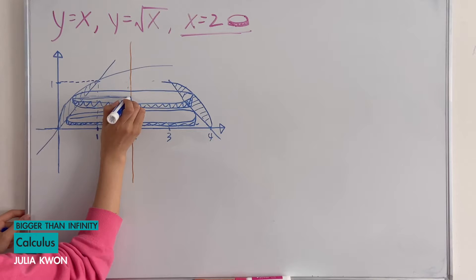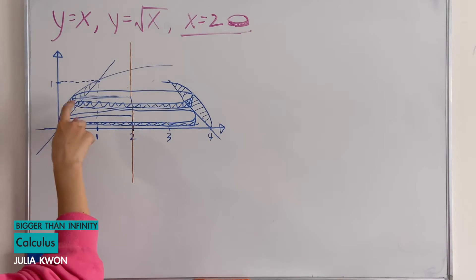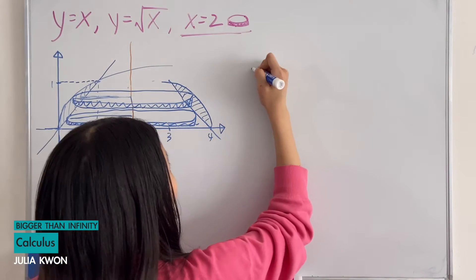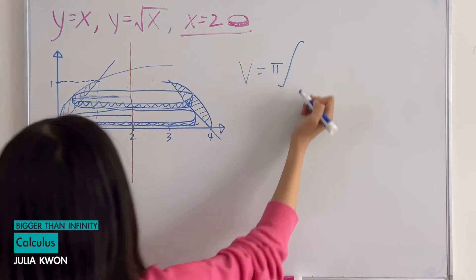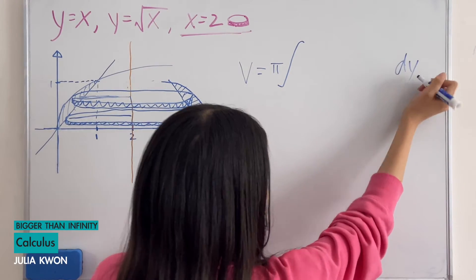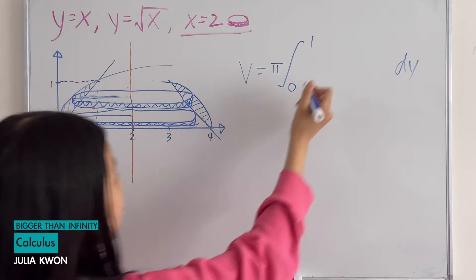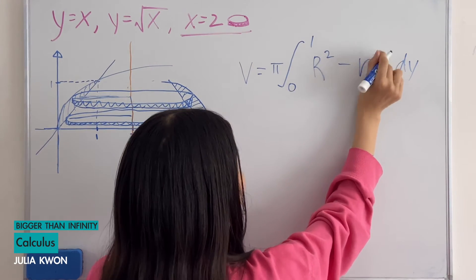Now we have to find the radius of each of these, because the volume will be pi times the integral from 0 to 1. We're going to be doing it in terms of y, so the interval will be from 0 to 1 of the larger radius squared subtracted by the smaller radius squared.